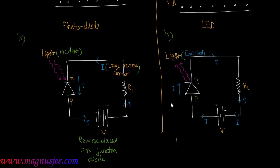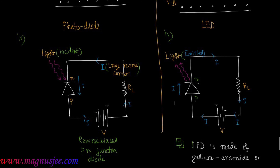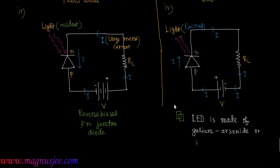Additional information: what type of semiconductor is used for LED? LED is made of gallium arsenide or indium phosphide. Gallium is one type of impurity, and indium is another type of impurity used in these semiconductor materials.